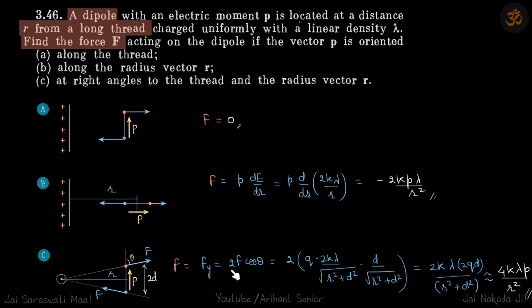So the net force is 2f cos theta, where f is q into E, which is q into 2k lambda/r. R is this distance, and this distance is the square root of r² plus d².